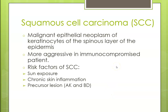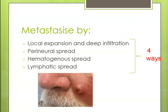Squamous cell carcinoma is a malignant epithelial neoplasm involving the spinous layer of the epidermis. It is more aggressive and usually occurs in immunocompromised patients. Sun exposure, skin inflammation, and the presence of actinic keratosis predispose patients to this cancer. There are four methods of spread: local expansion, perineural, hematological, or lymphatic spread.